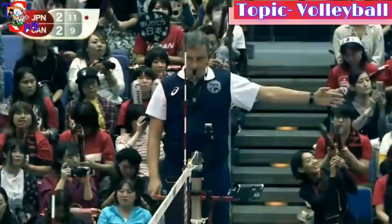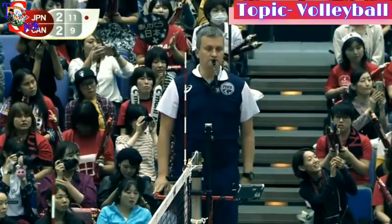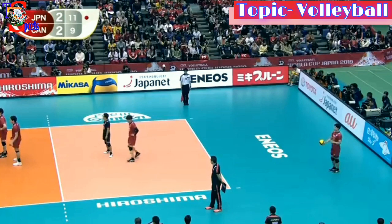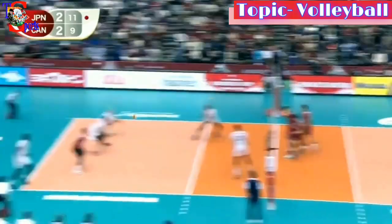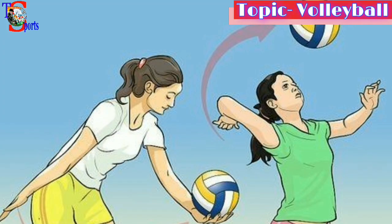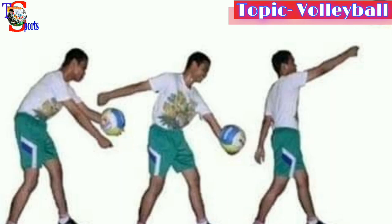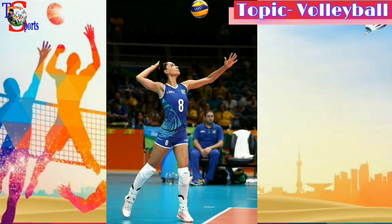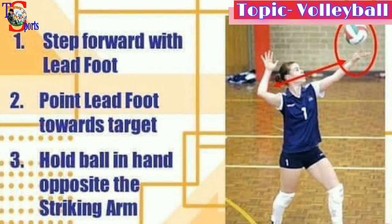The rally starts with a service — it is your first opportunity to score a point. The server goes behind the end line and tosses the ball after the referee's whistle, then hits it over the net into the opponent's court. Commonly, two types of service are used: underarm serve and overarm serve, which is also called the tennis serve.